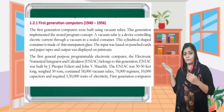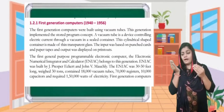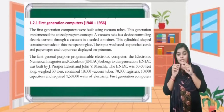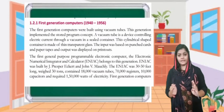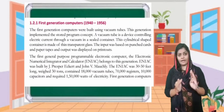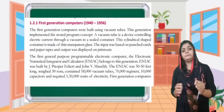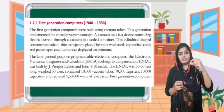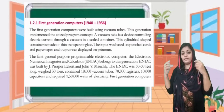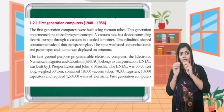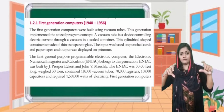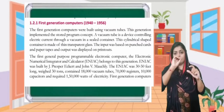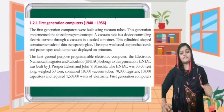This is the figure for a vacuum tube. The vacuum tube is sealed, and electric current can be passed through it. This cylinder-shaped container is made up of thin transparent glass. The input was based on punched cards and paper tape, and output was displayed in printouts.